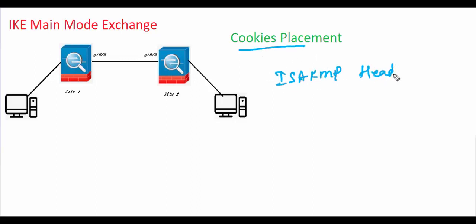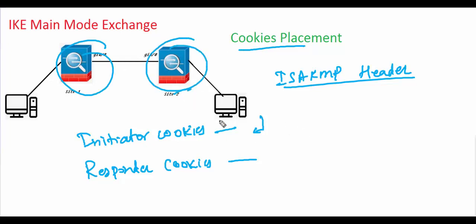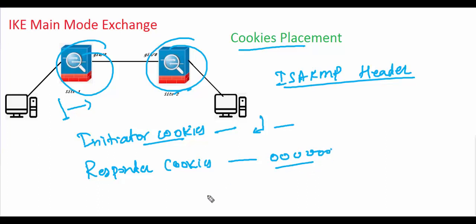These cookies are placed in the ISAKMP header, in the initiator and responder cookie fields. The initiator cookie is filled in the initiator cookie field, and the responder cookie in the responder field. In the first message of the negotiation, the responder cookie field is set to zero because the responder cookie is not yet known. Each cookie field is eight octets (eight bytes).